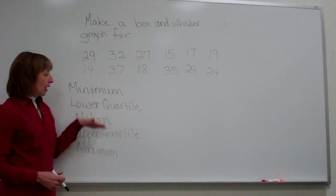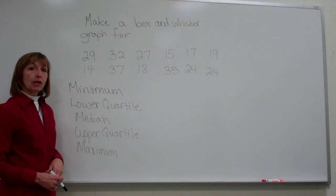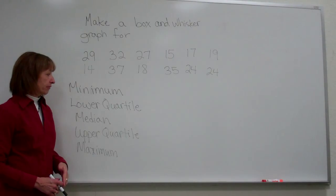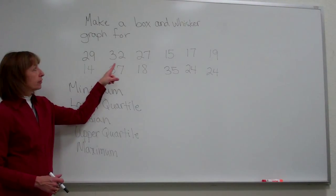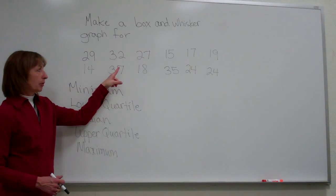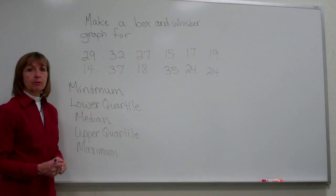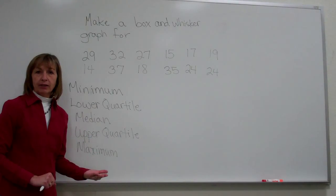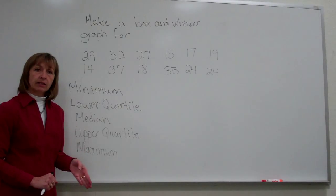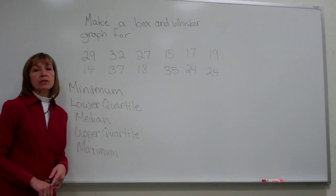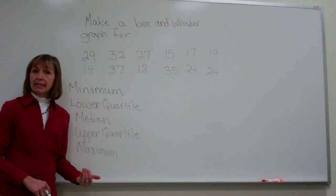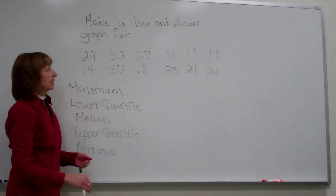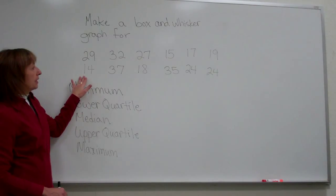When we want to find each of these, it's really important that we put our data set in order, from smallest to largest. Let's first look at the data set that I have for an example, and we're going to order our data set from smallest to largest. When you have bigger data sets, you might want to put them in a list in your graphing calculator and have it sort ascending, or sometimes people will put it in a stem-and-leaf diagram.